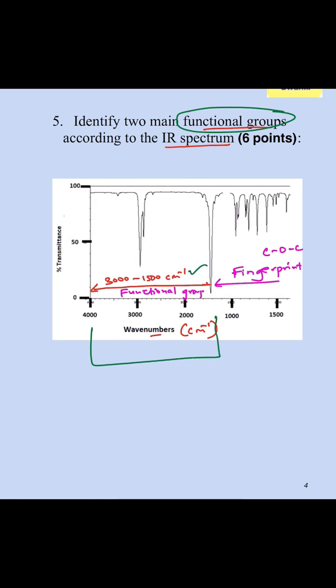If you see a broad peak around 3500, so you see something that looks like that, that's an OH. We don't have OH here.